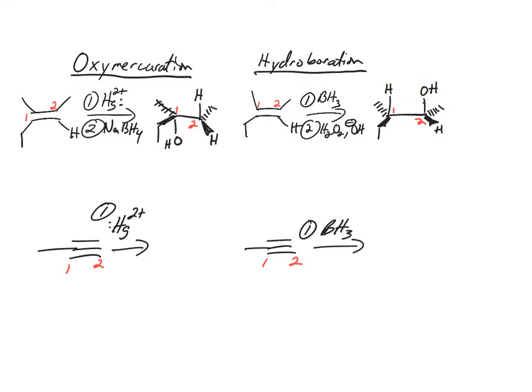You need to know the first step for both of these. In the first step you're adding the mercury and then the solvent reacts with the three-membered ring. The first step is a concerted step where it's a syn addition. You didn't need to know the second step for either of these.